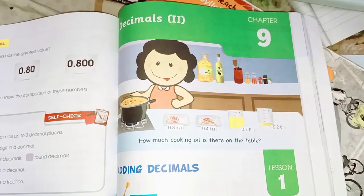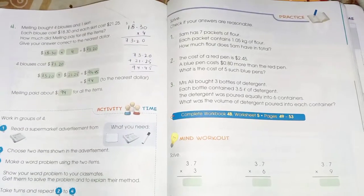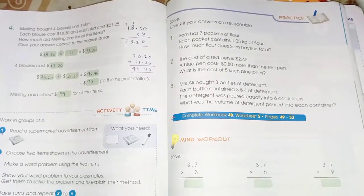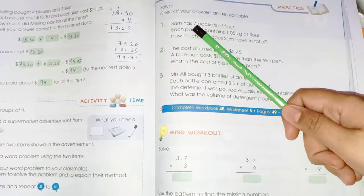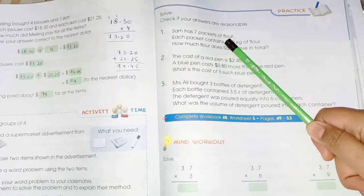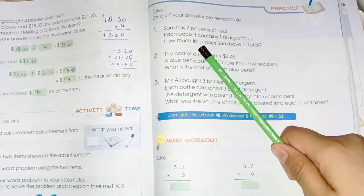Hi everyone, today we are going to solve decimal word problems from Book 4, page 216. Here we have three word problems. Number 1: Sam has seven packets of flour. Each packet contains 1.05 kg of flour. How much flour does Sam have in total?